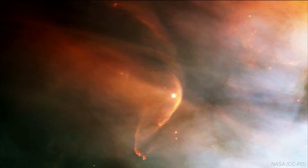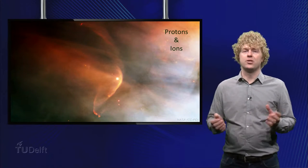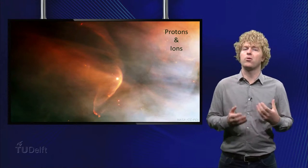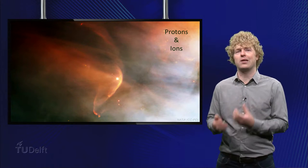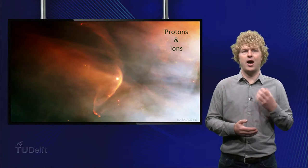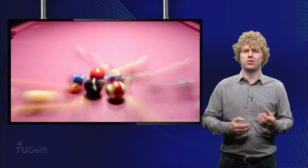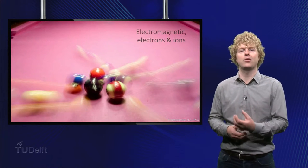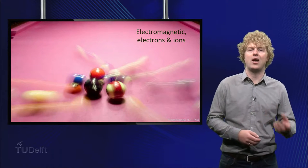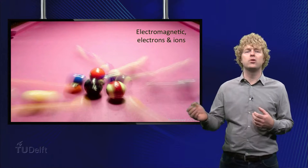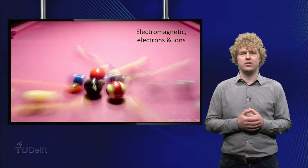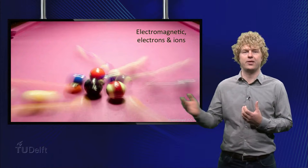Cosmic rays are a third source, with mainly protons and ions. They come from all kinds of sources in the universe. Radiation hitting a surface of a spacecraft structure or component can also lead to secondary radiation. A high energy particle can also create bremsstrahlung, comprising electromagnetic radiation, electrons and ions. It's like the white billiard ball hitting a pool of nicely arranged other balls, as shown in this picture.